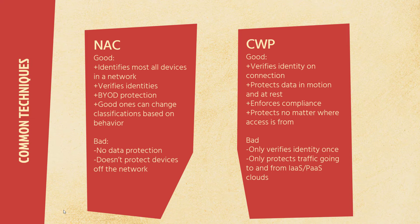Next up is your CWP, your cloud workload protection. This focuses not on end devices but on what you have in the cloud itself. A good CWP verifies identities on connection, protects your data in motion and at rest, enforces compliance, and protects what's in the cloud no matter where the access is from. The bad news is it only verifies your identity once, only protects traffic going to and from your IaaS or PaaS clouds — storage, apps, whatever you have up there. It doesn't pay attention to the rest of network traffic. It's a very valuable but limited edge to protect.